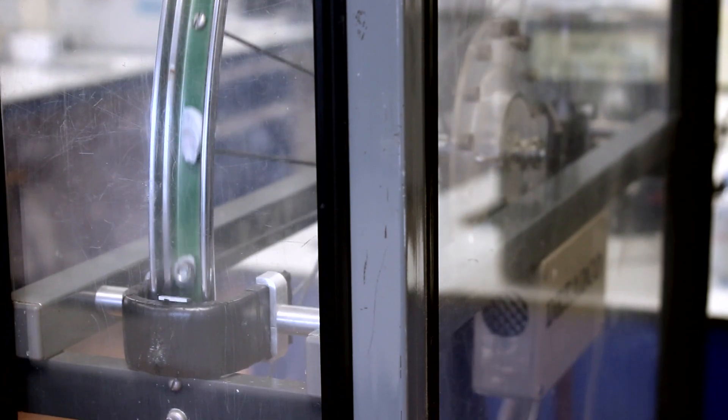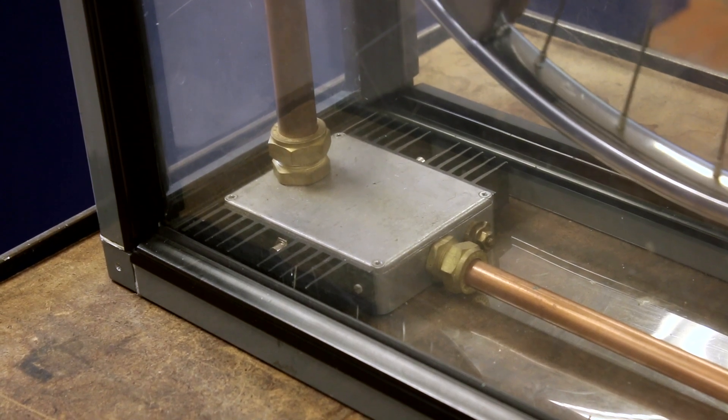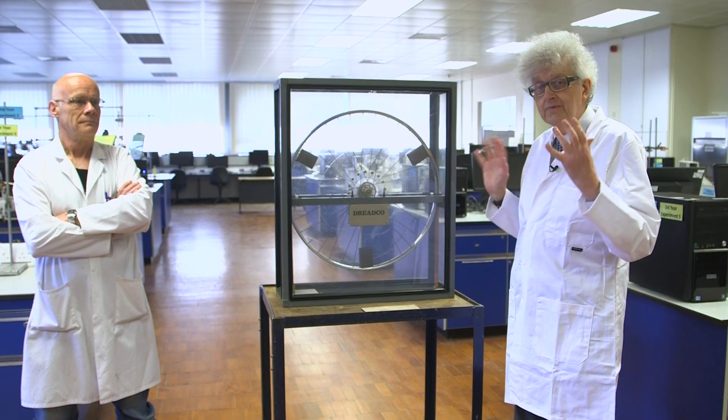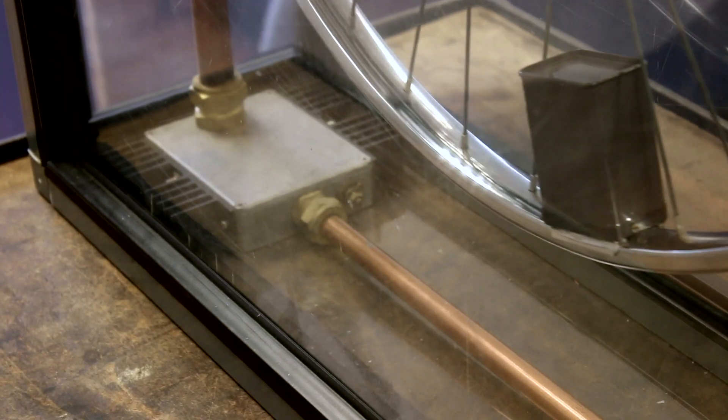They need energy to make the wheel go round and you cannot create energy out of nothing. It has to have an energy supply, but if you look at this wheel, it is going round with no obvious way of propelling it. There's no motor, there are all sorts of things around it, but it's not clear how it works.